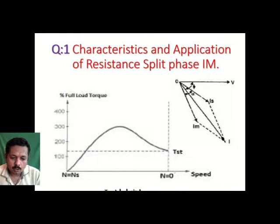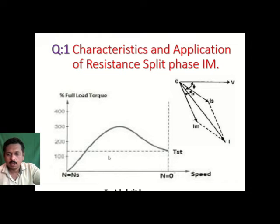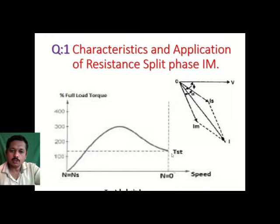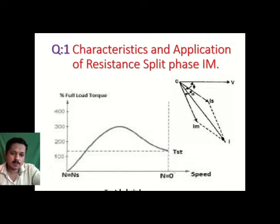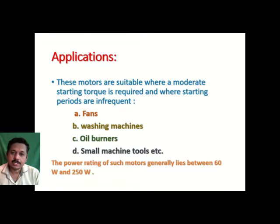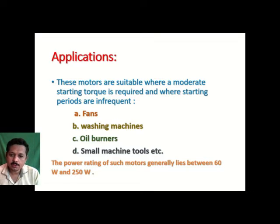This is a constant speed motor. As observed in the characteristics, it can consistently run at more than 100% torque, making it suitable for constant speed applications. However, the operation should not be frequent — due to its starting time limitation, we use this motor where operation is very infrequent and starting torque requirement is moderate, not very high. Applications include fans, washing machines, oil burners, small machine tools, etc.